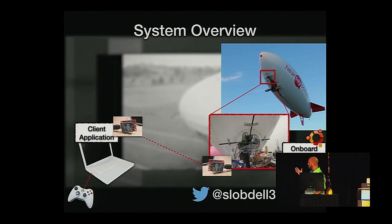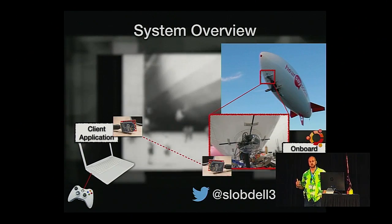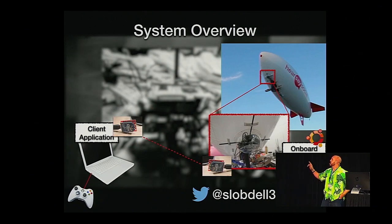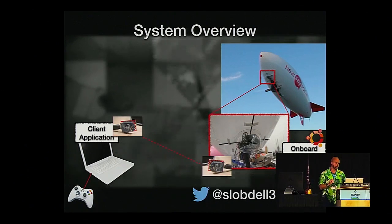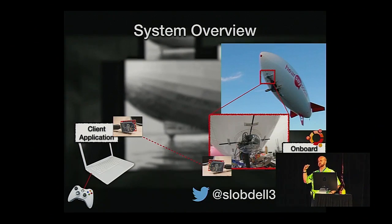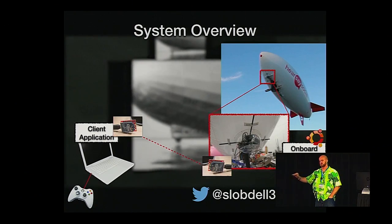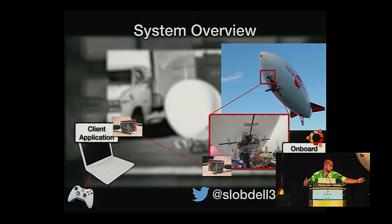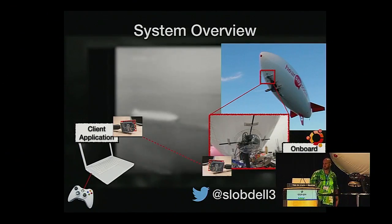The overall architecture: we have a laptop with a client application in Python — everything is in Python. We have an Xbox remote wired to a laptop. That remote sends commands encoded into specialized byte commands, sent across a wireless XBee connection. That connects to the onboard controller in the blimp, which is a full-blown computer running Ubuntu 10.4, which in turn sends commands to the rotors.